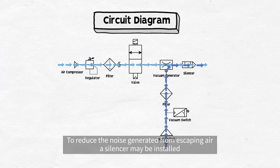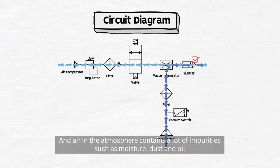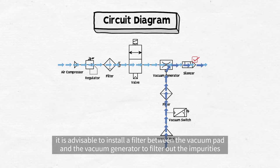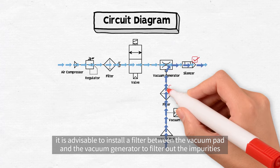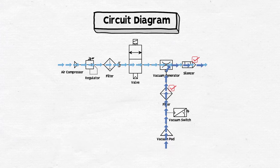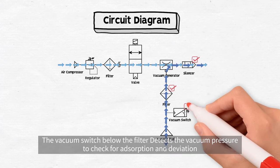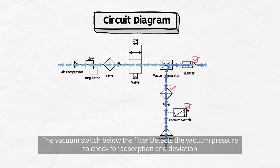To reduce the noise generated from escaping air, a silencer may be installed. Also, air in the atmosphere contains a lot of impurities such as moisture, dust and oil. So, it is advisable to install a filter between the vacuum pad and the vacuum generator to filter out the impurities. The vacuum switch below the filter detects the vacuum pressure to check for absorption and deviation.